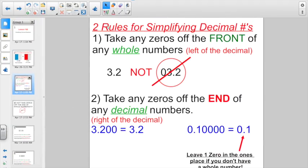We got basically two rules right now. One, take off any zeros off the front of any whole numbers. That's left of the decimal point. Here we have 3 and 2 tenths. You don't want to write it 0, 3 and 2 tenths. And we've talked about starting whole numbers with zeros already, right?